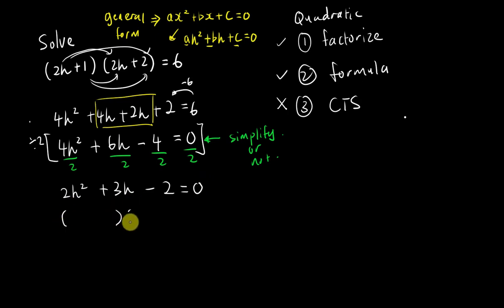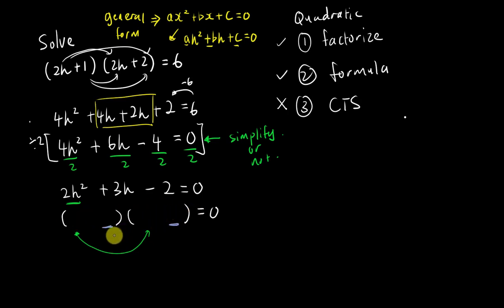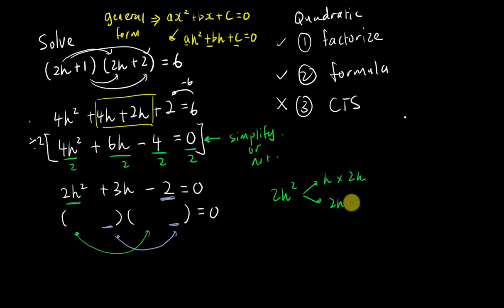Now I'll try to factorize. I draw two brackets, equals zero. To get the first term, I think about what two terms multiply to give 2h². The answer is h multiplied by 2h. For the constant term, I need two numbers that multiply to give negative 2: options are (1, −2), (−2, 1), or (−1, 2). I'll try the first combination — 1 and negative 2 — focusing on integers only.